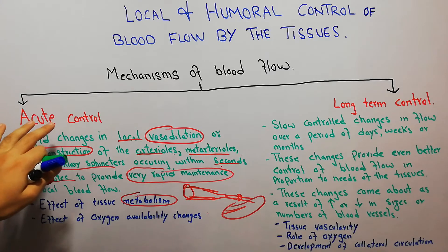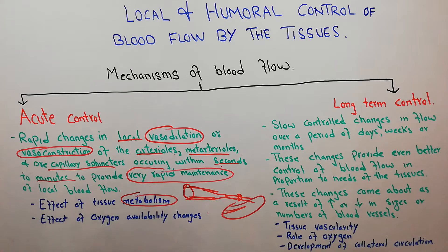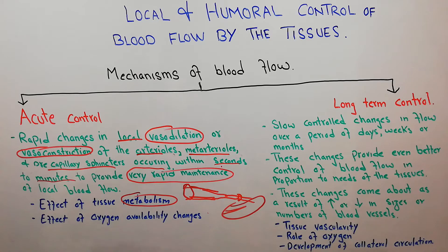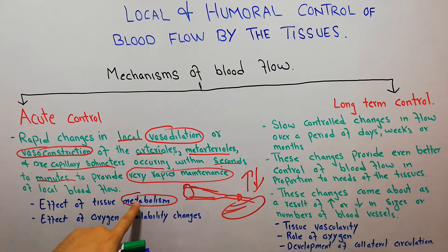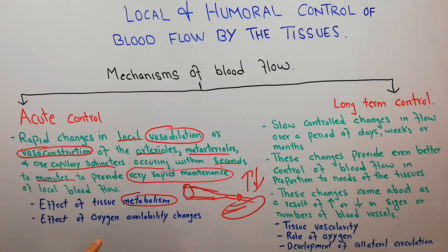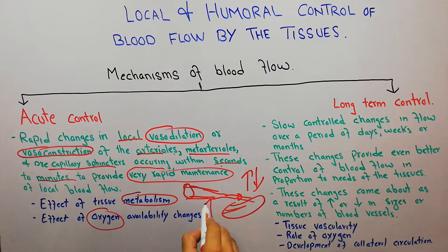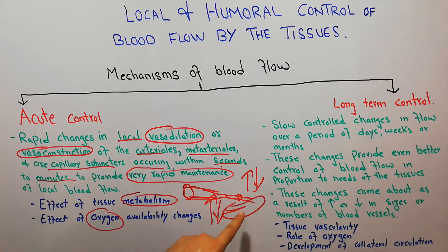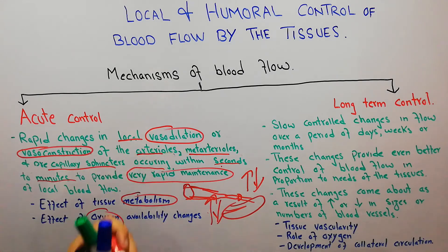The factors responsible for acute control are: first, tissue metabolism — the consumption of nutrients by the tissue increases or decreases, which increases or decreases blood flow to that tissue. Second, the availability of oxygen — an increase or decrease in oxygen availability to a tissue such as muscle, skin, kidney, or heart is another factor in the rapid control of blood flow to that tissue.